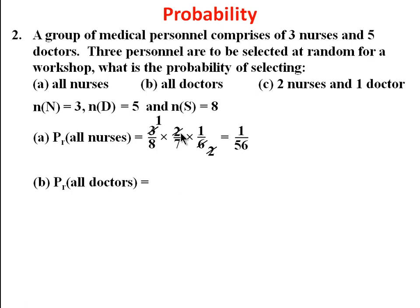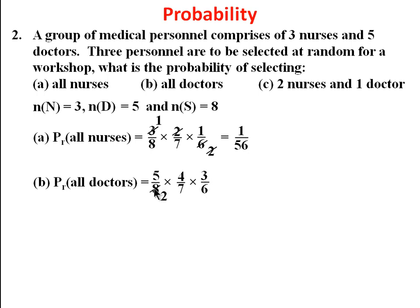For the probability of selecting all doctors: the probability of the first person being a doctor is 5 over 8, the second is 4 over 7 (doctors reduced by one), and the third is 3 over 6 (doctors reduced by two, 3 remain out of 6). Simplifying: we get 5 × 1 = 5 in the numerator and 2 × 2 × 7 = 28 in the denominator, giving 5 over 56.